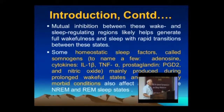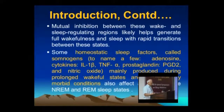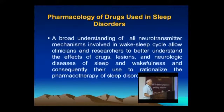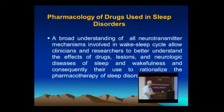There are certain mutual inhibitions of these wake and sleep regulating regions that help generate full wakefulness and sleep, with rapid transition between NREM and REM. Some homeostatic sleep factors — known as somnogens — are produced in the brain by overactivity and increased energy requirement, especially during long wakefulness. These substances include adenosine, cytokines like interleukin-1-beta, TNF-alpha, prostaglandin PGD2, and nitric oxide. Understanding all these transmitter mechanisms allows clinicians to rationalize the pharmacotherapy of sleep disorders.